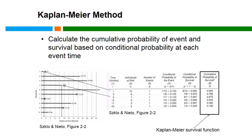At the time of each event — at times 1, 3, 9, 13, 17, and 20 months — the conditional probability of the event is calculated as the number of individuals having the event divided by the number of individuals remaining at risk. The conditional probability of survival is 1 minus the conditional probability of the event, and the cumulative probability of survival at each time point is the product of the conditional probabilities of survival up to that time point. At month 1, with 10 individuals at risk and 1 event, the conditional probability of the event was 1/10 or 0.1, the conditional probability of survival was 0.9, and the cumulative probability of survival at this time point was 0.9.